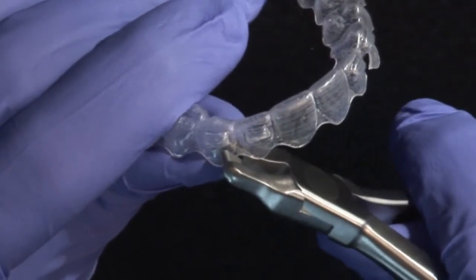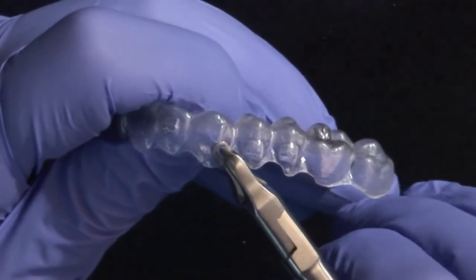The depth of the teardrop reservoir can be adjusted by positioning the instrument deeper, or more occlusally into the plastic, or in contrast, closer to the gingival margin of the aligner.